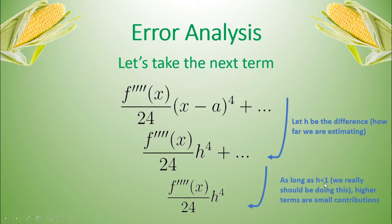Now, as long as h is less than 1, then the next term, which is going to have an h to the fifth, or the next term after that, which is going to have an h to the sixth, and so on, they're going to be smaller and smaller contributions to this error. And so we can kind of just ignore it and just look at this term, which is the next term up in our Taylor series estimate, and use that as our basis for what the error of this estimate really is.